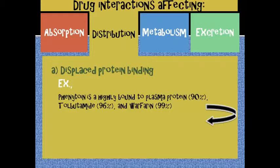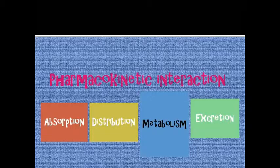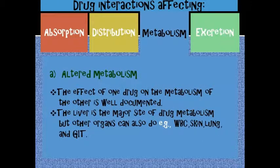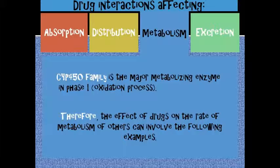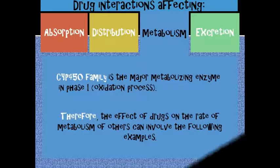Next, let us discuss altered metabolism. It is the effect of one drug on the metabolism of another, and it is well documented. The liver is the major site of drug metabolism, but other organs can also participate. The CYP450 family is the major metabolizing enzyme in phase 1. The effect of drugs on the rate of metabolism of others can involve the following examples.